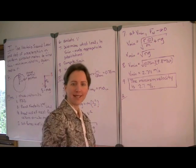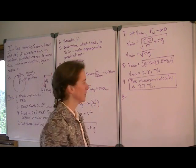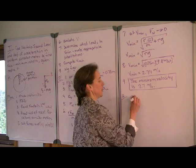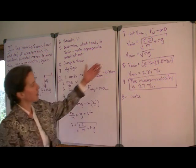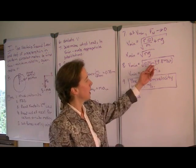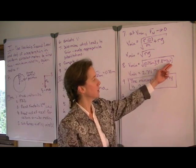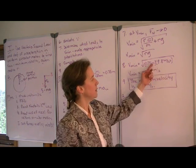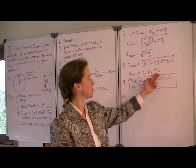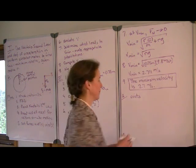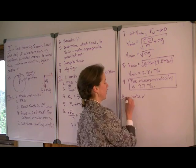Before we conclude, let's assess our answer to see whether it makes sense. First of all, let's check our units. We didn't really substitute any values until our very last step. We have meters times meters per second squared. So that is meters squared per second squared. So the square root leaves us with meters per second, which is the correct unit for velocity. So we gain some confidence that way.